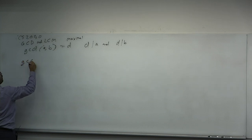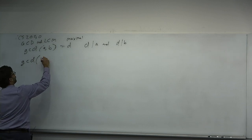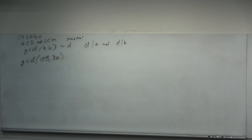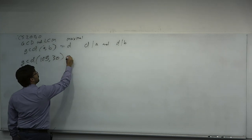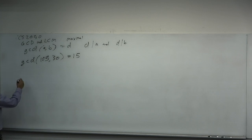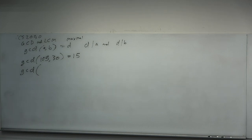What is GCD of 105 and 30? The answer is 15. One way to think of it is as a set intersection. You write out each of A and B as a prime factorization, and then you take the set intersection of their factors. So 105 has prime factorization 3, 5, 7, and 30 has prime factorization 2, 3, 5.